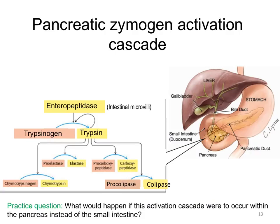This image shows another view of the pancreatic zymogen activation cascade. Trypsinogen is one of the inactive zymogens secreted by the pancreas into the lumen of the small intestine. It interacts with the enzyme enteropeptidase, which is located on the microvilli surface pointing into the lumen, and enteropeptidase cleaves off the inactivating peptide from trypsinogen, releasing active trypsin.